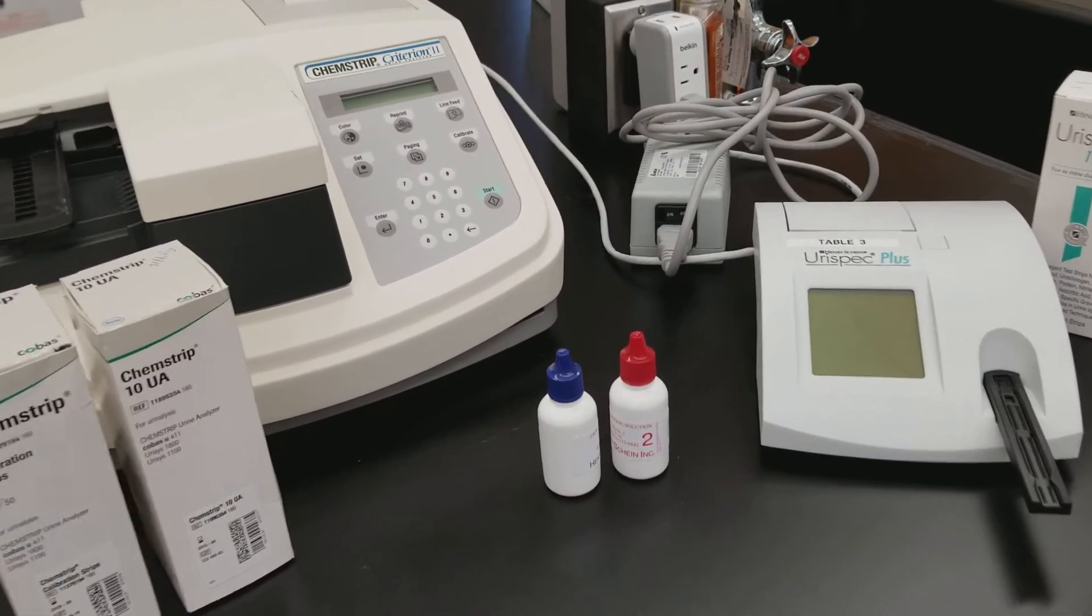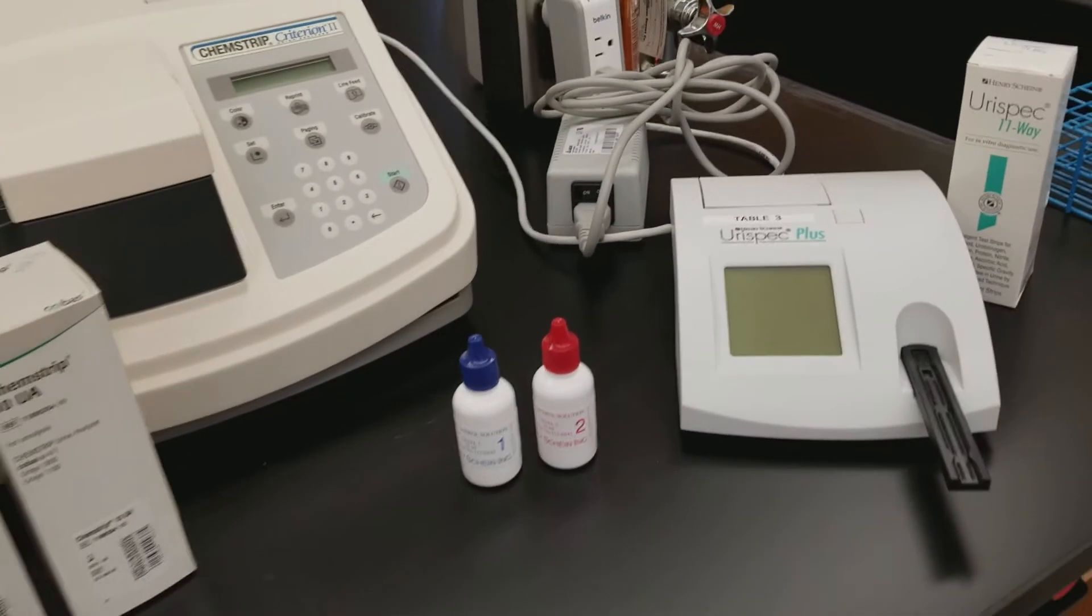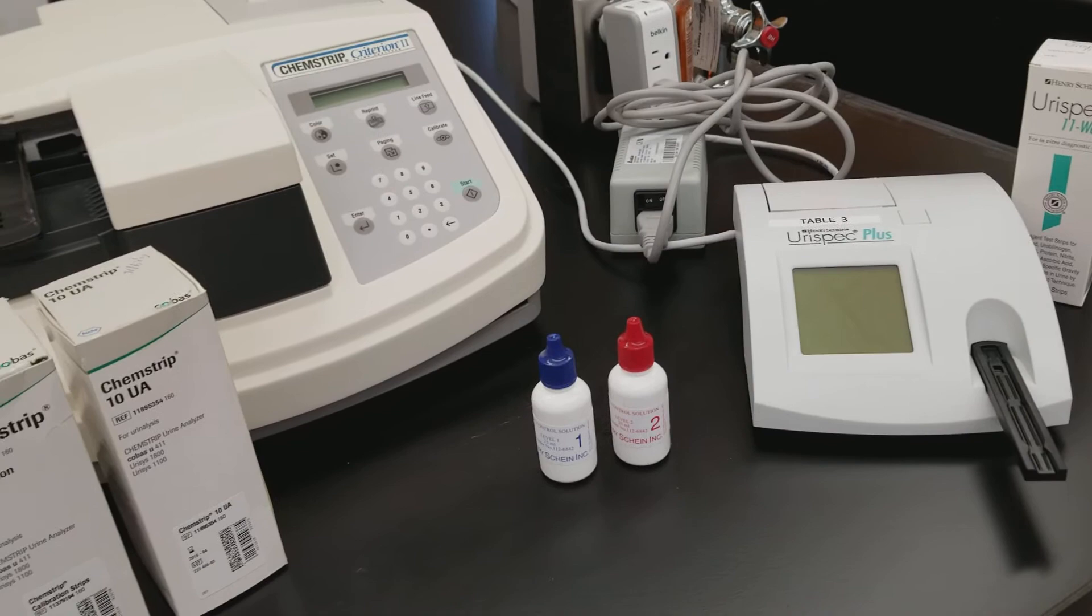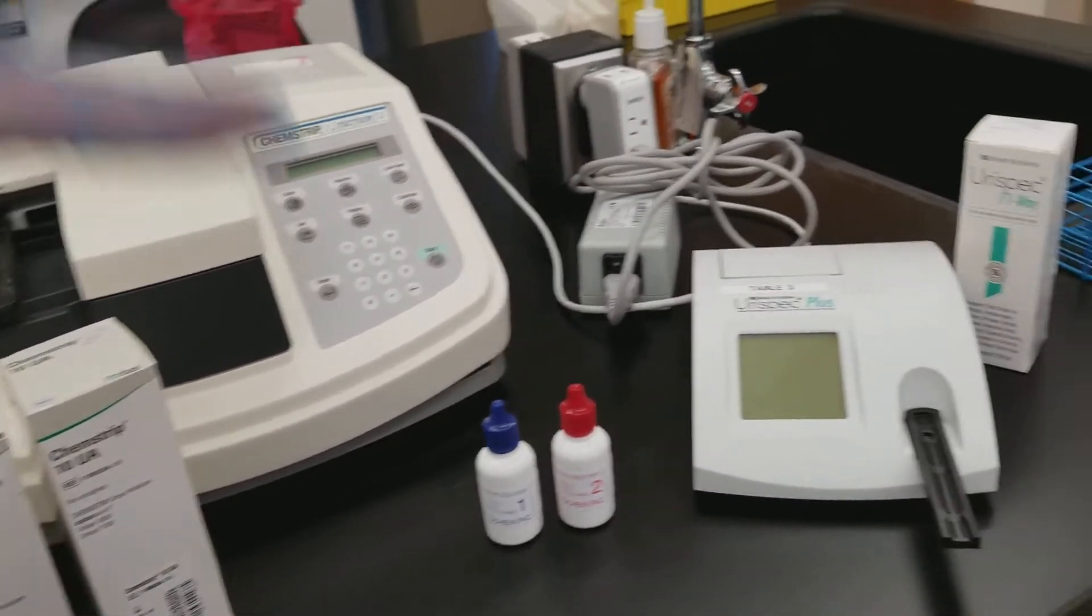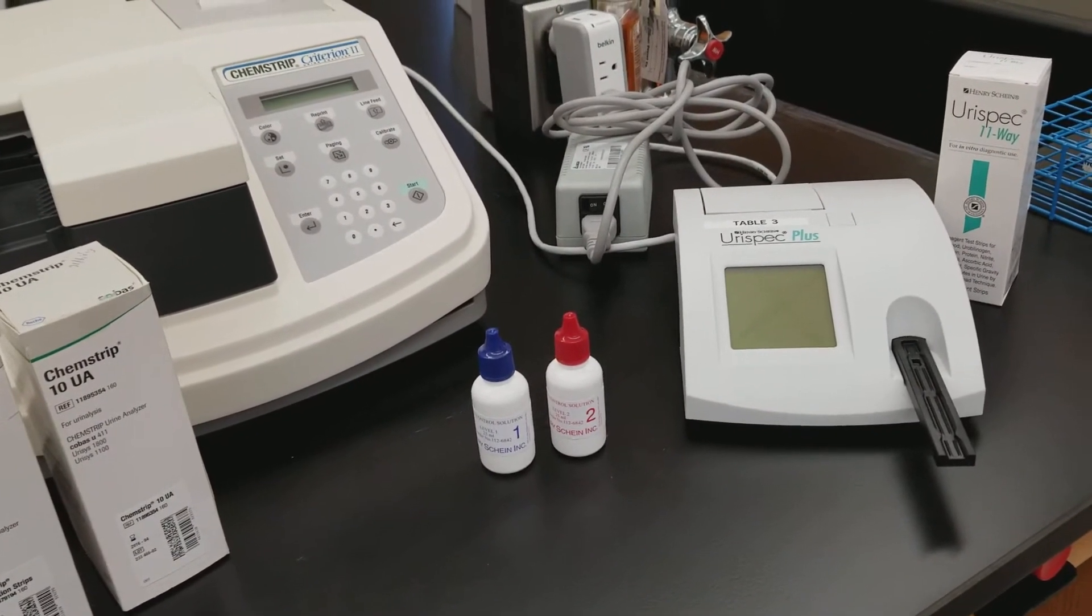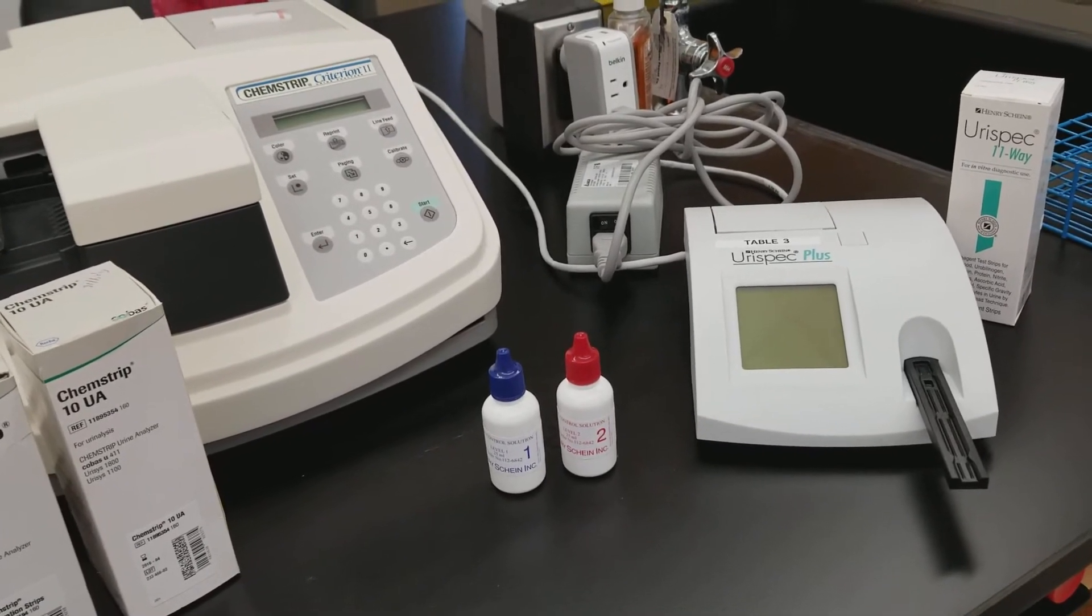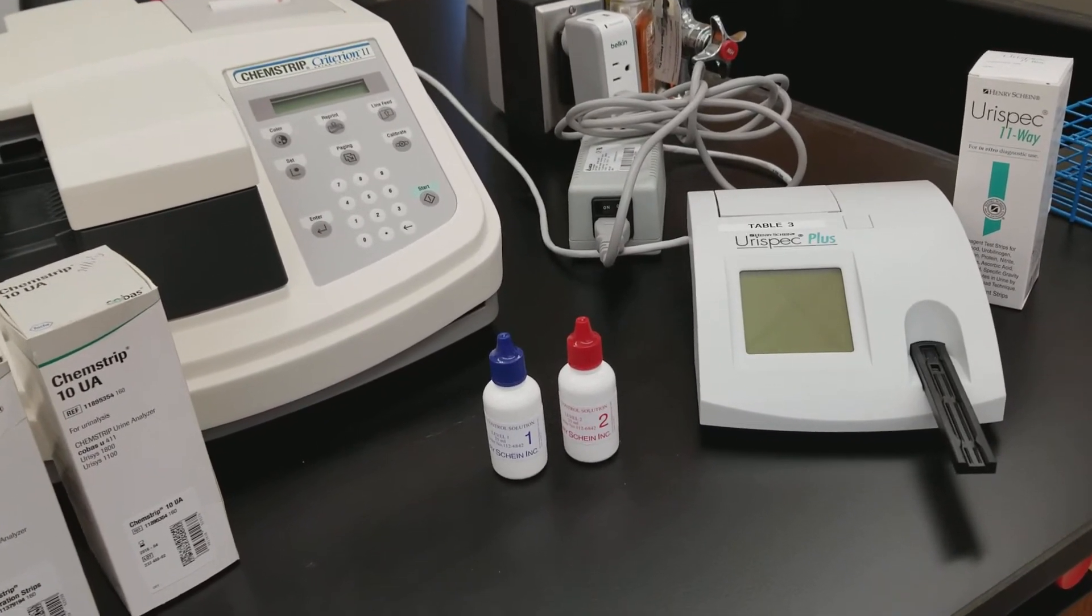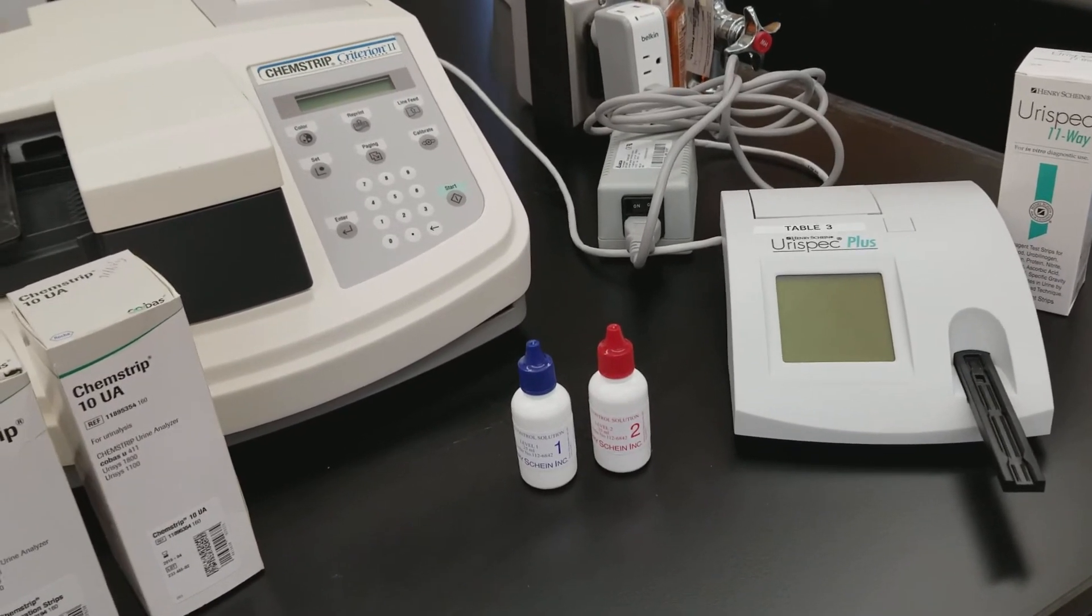Both of them are semi-automated because you have to manually dip the strip into the specimen and then put the strip onto the analyzer. It is automated because it then uses a light to measure the amount of reflected light at certain wavelengths in order to measure the component or the analyte in the patient's urine.